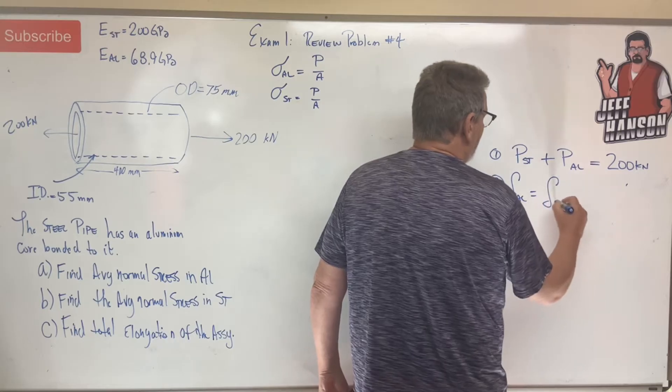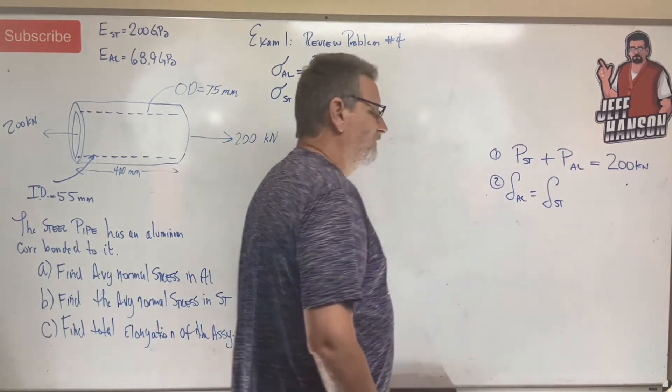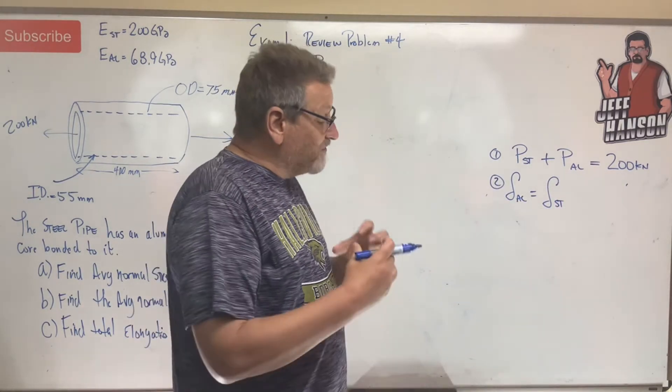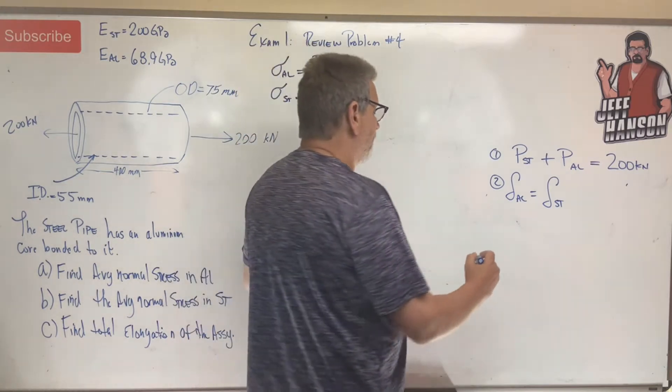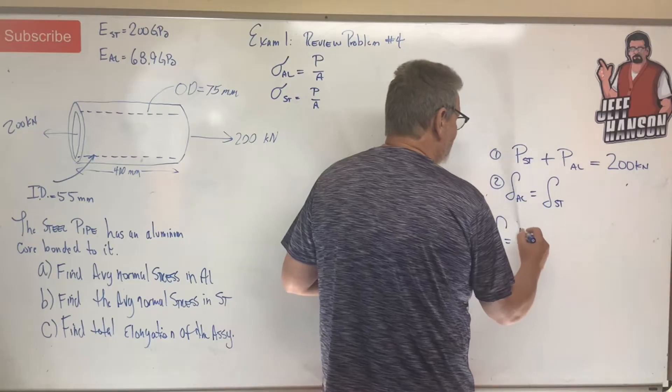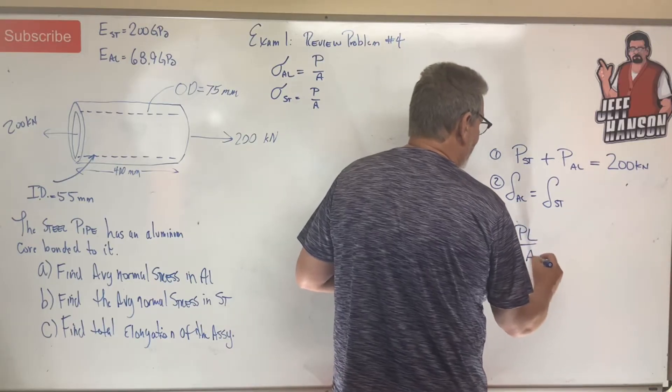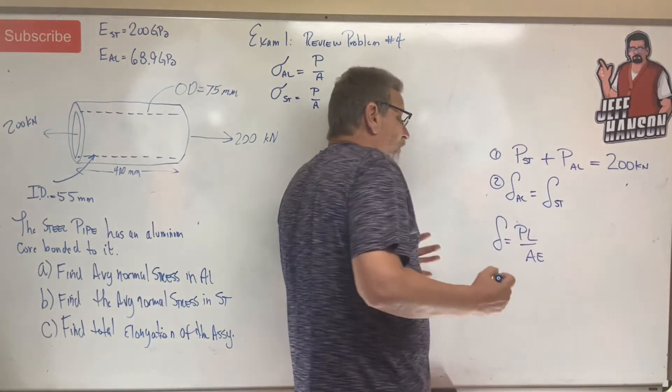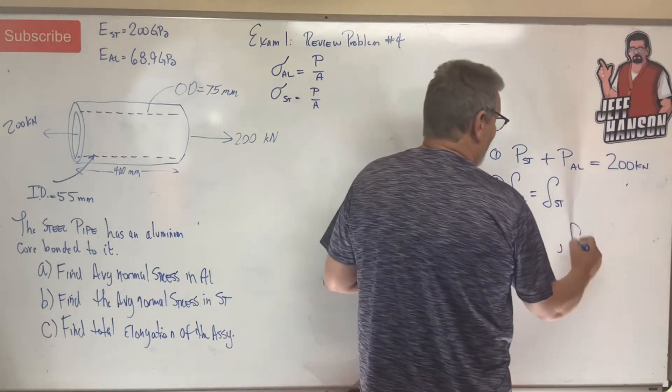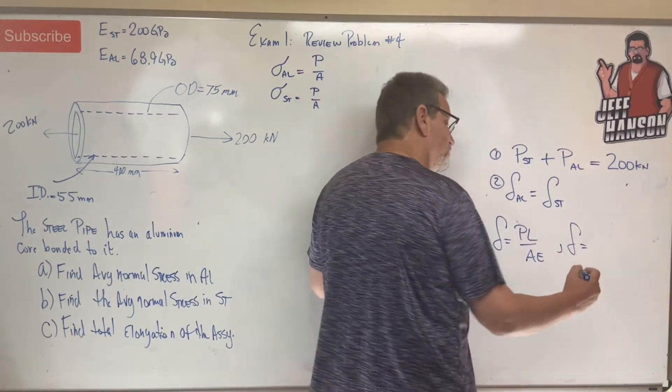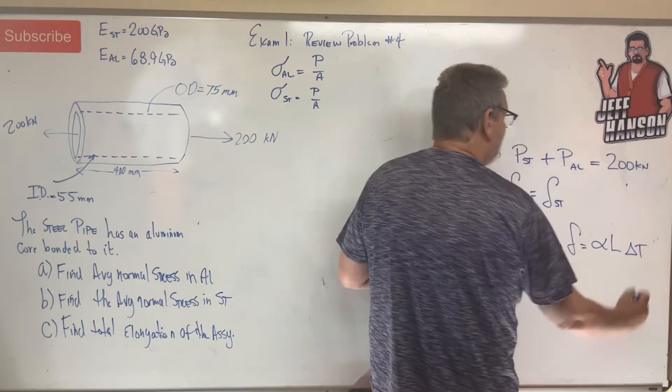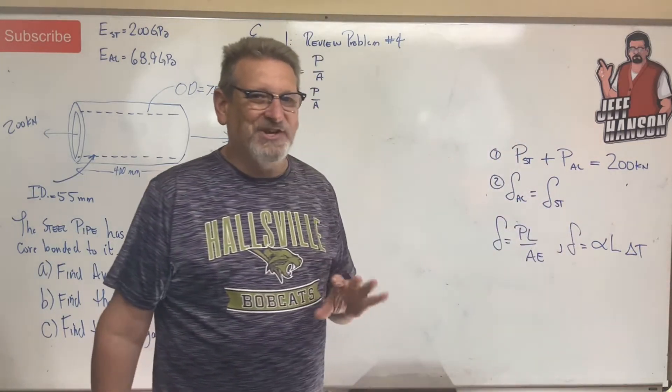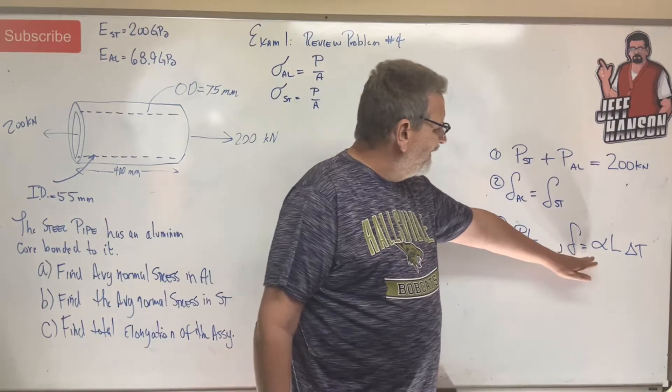So number two, we know that delta aluminum is going to be equal to the delta in the steel. Now all of this stretching is coming from force, so for our delta equation we're going to use PL over AE. The other one that we learned in this chapter is delta, but that was due to temperature, that was alpha L delta T. But we don't have any temperature change here, so this one's not going to take effect.